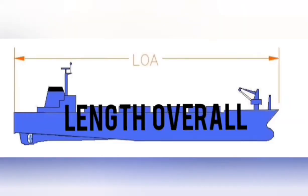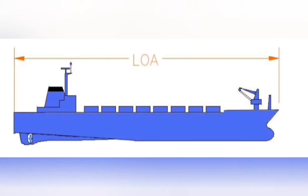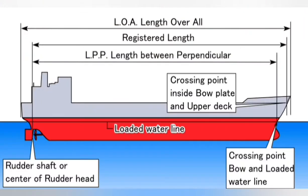Length Overall: It is the distance measured between the fore and aft extreme points of the ship. Register Length: It is the length from the fore part of the stem to the aft side of the stern post.